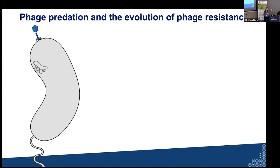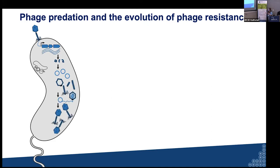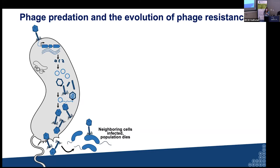My lab thinks about lytic bacteriophages specifically. These are viruses that engage with specific receptors on the cell surface, inject their double-stranded DNA genomes, and then elaborate a wonderfully orchestrated transcriptional and translational program to take over the host cell machinery, replicate their genome, and assemble structural virions which house newly replicated genomes. These new progeny viruses can lyse the cell and release into the environment to infect and kill neighboring cells. This imposes a tremendous selective force on bacteria, which must evolve mechanisms to defend themselves against viral predation.